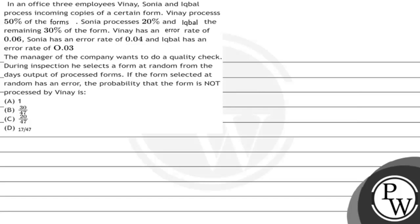Hello. So let's see the question. The question says that in an office, three employees Vinay, Sonia and Iqbal process incoming copies of a certain form. Vinay processes 50% of the forms, Sonia processes 20% and Iqbal the remaining 30%. Vinay has an error rate of 0.06, Sonia has an error rate of 0.04 and Iqbal has an error rate of 0.03.